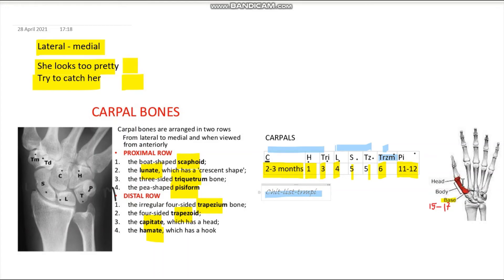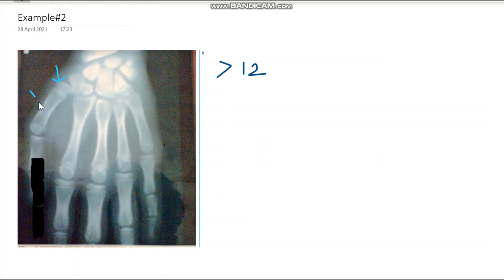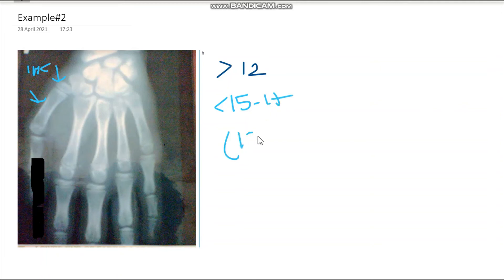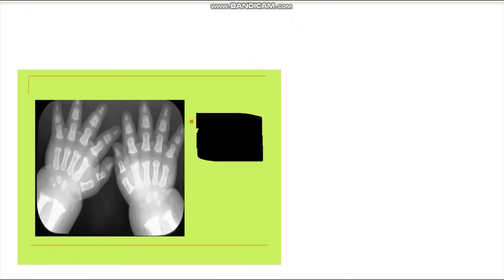One more thing: in this wrist X-ray you can see the base of the first metacarpal. The base fuses with the body at around 15 to 17 years of age. In this example you can see the base and body of the first metacarpal — there is a tiny gap in between, meaning they haven't fused yet, so it is less than 15 to 17 years of age. Combined with the carpal finding, this person is in the range of 12 to 15 years of age.